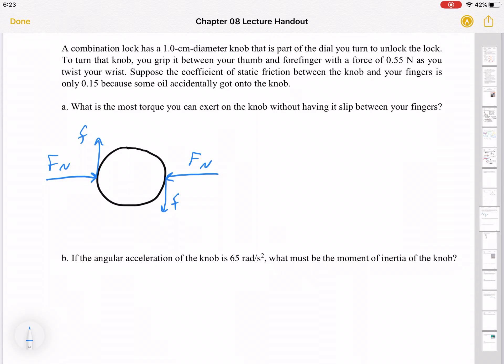And this is static friction if our fingers aren't slipping on the knob. Right? And we can label, there's some radius for this thing.